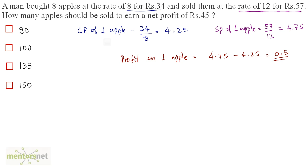How many apples will have to be sold to earn a profit of 45 rupees? The number of apples equals total desired profit divided by profit per apple, so 45 divided by 0.5, which equals 90. So the total number of apples that should be sold is 90 apples.